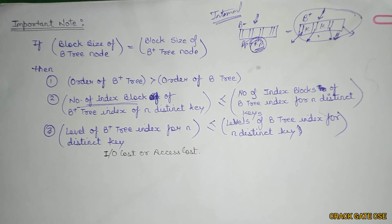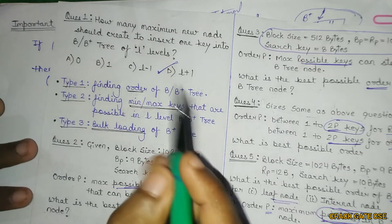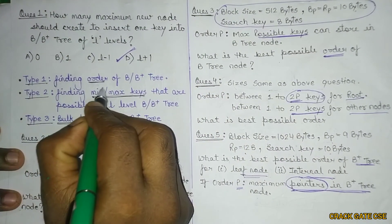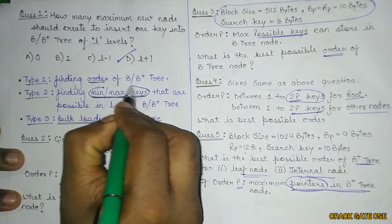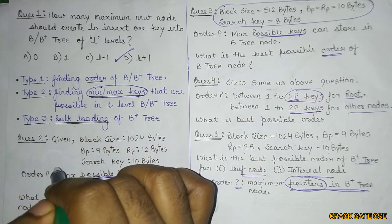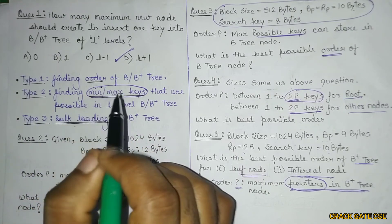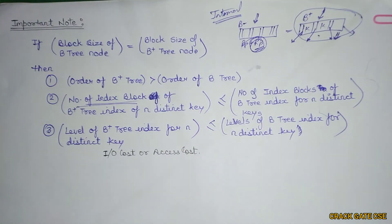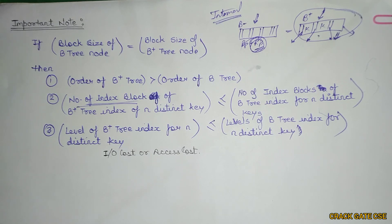This is all about B and B+ trees. In the next video, we will be discussing type 2 questions, where we find the minimum and maximum keys possible in an L-level B and B+ tree. All these types of questions are very important for any competitive exam. Thank you very much for watching. Links for previous videos on B and B+ tree indexing and file organization are given in the description. Keep supporting, keep learning. Have a great day.